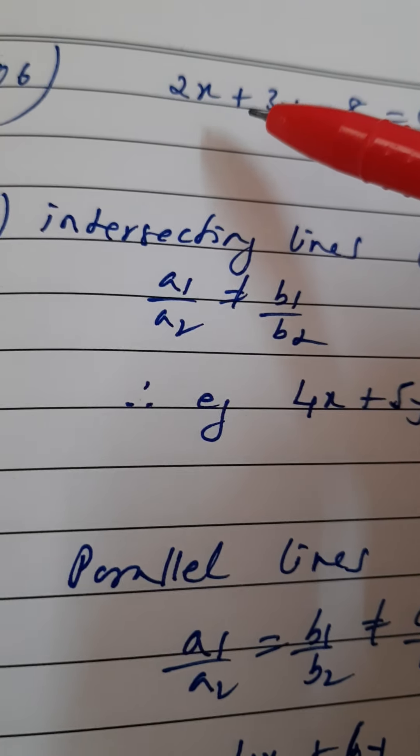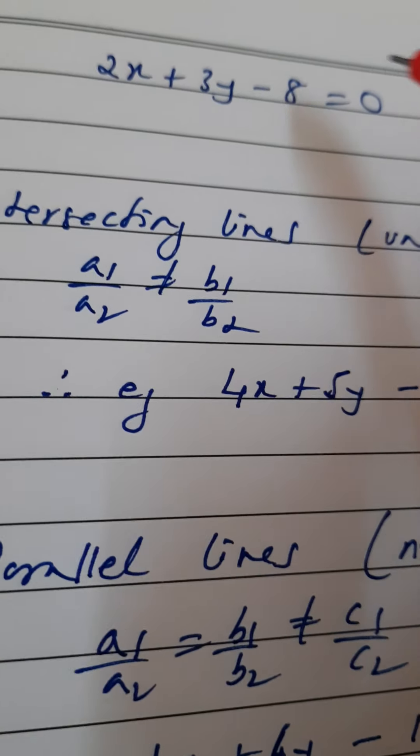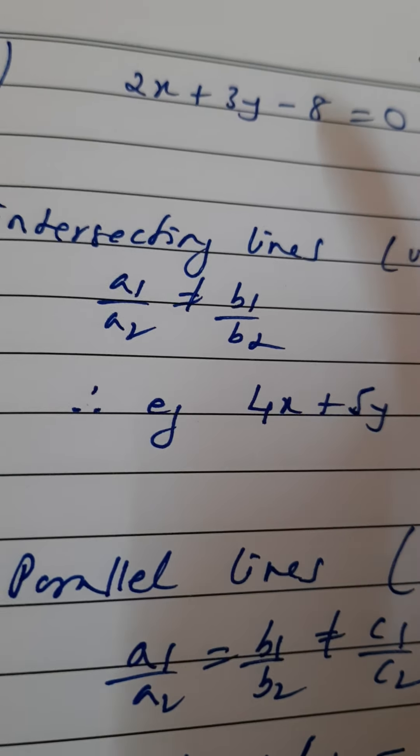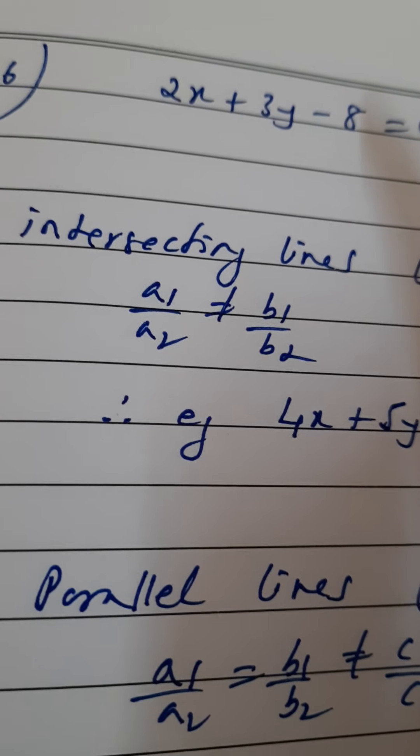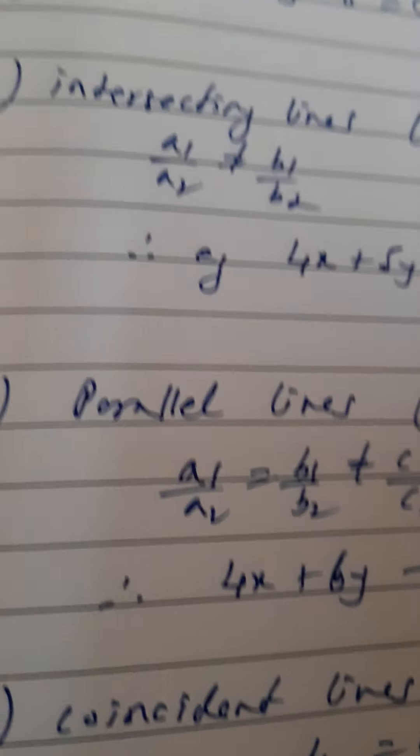Question number six provides a given linear equation in two variables: 2x + 3y - 8 = 0. The question asks to write another linear equation in two variables such that the geometric representation has intersecting lines, parallel lines, and coincident lines. Let's take one by one.